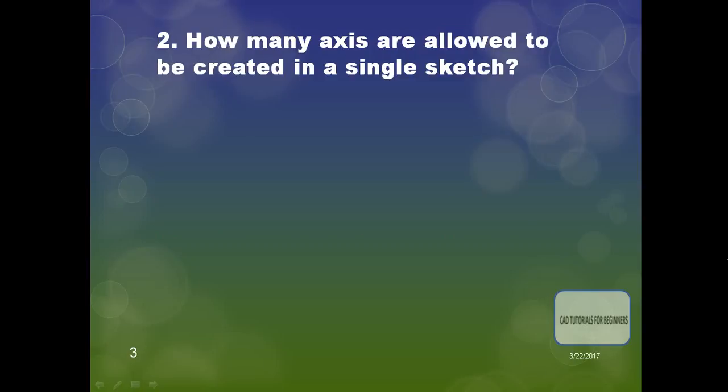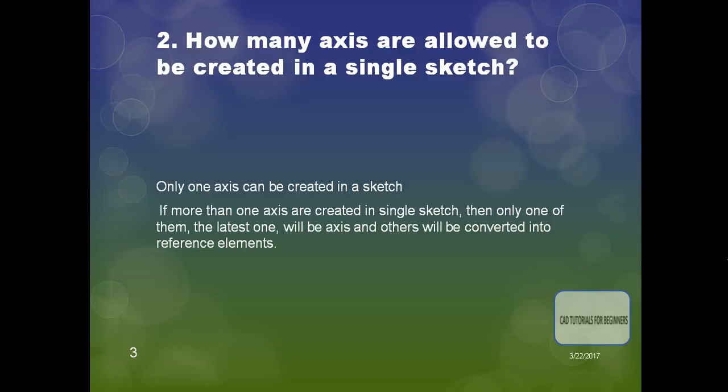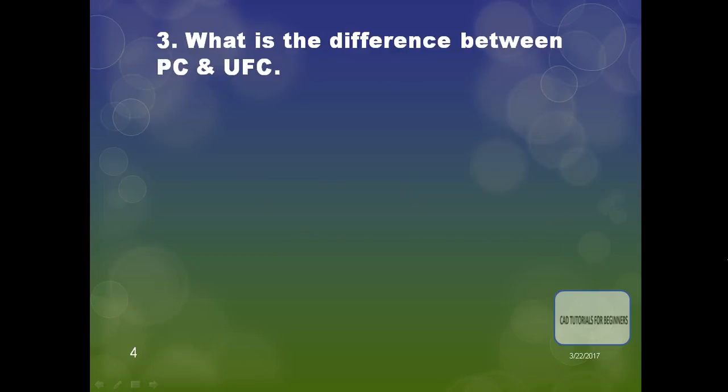The next question is: how many axes are allowed to be created in a single sketch? Only one axis can be created in a single sketch. If more than one axis is created, only the latest one will be the axis and the others will be converted into reference elements.